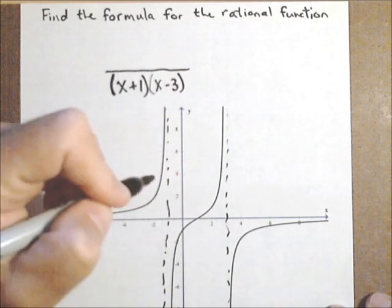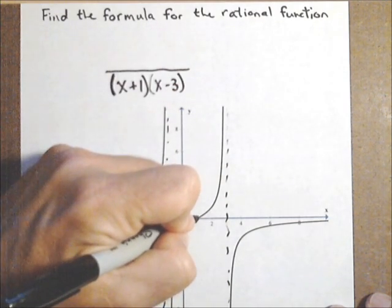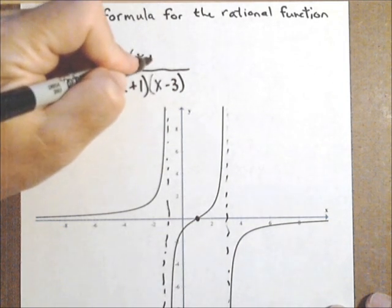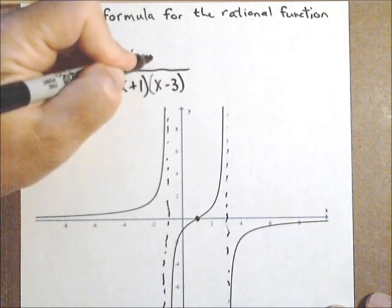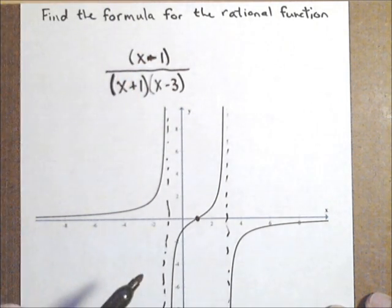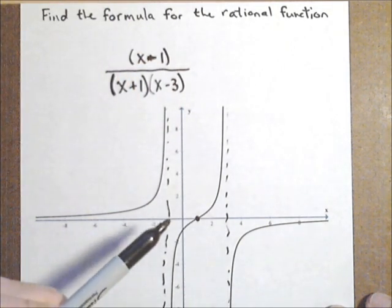Next thing we look for are any zeros. We have a zero right here. So we have a factor of x minus 1 because it's about at 1 in the numerator.